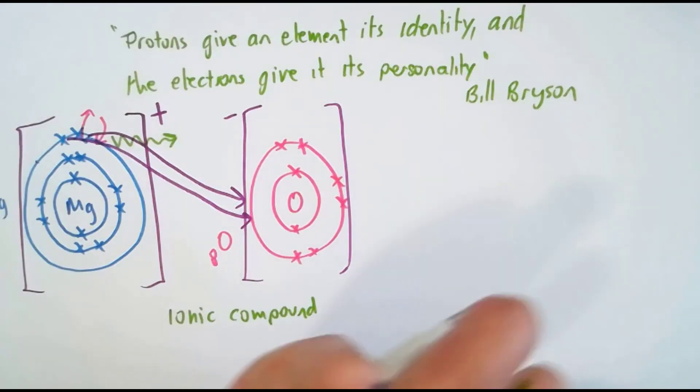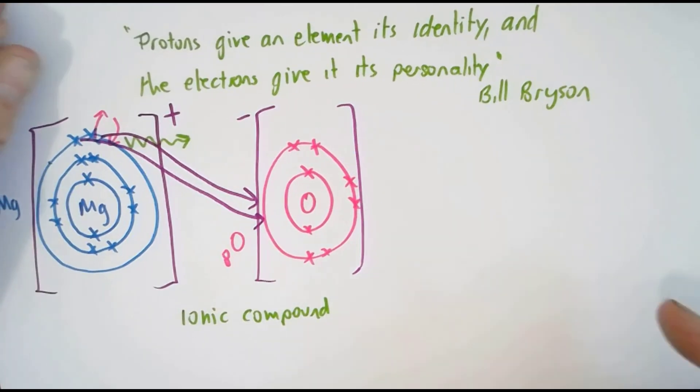And now you just get a bit of an idea of why the electron configuration is important, and why electrons give an element its personality in terms of its chemical activity.